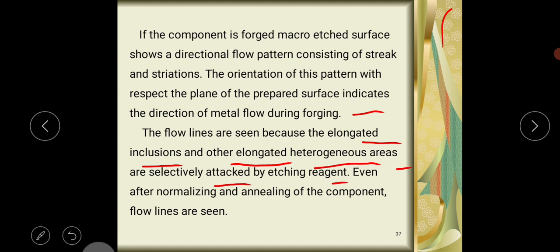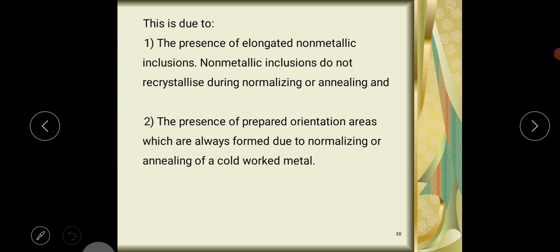Even after normalizing and annealing of the component, flow lines are seen. This is due to the presence of elongated non-metallic inclusions. Non-metallic inclusions do not recrystallize during normalizing and annealing. And second, the presence of preferred orientation areas which are always formed due to normalizing or annealing of cold-worked metal.